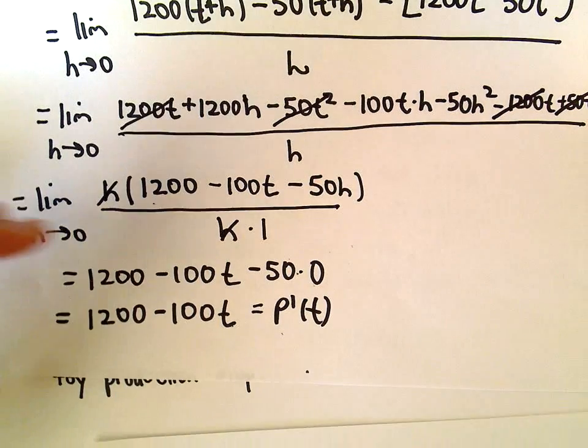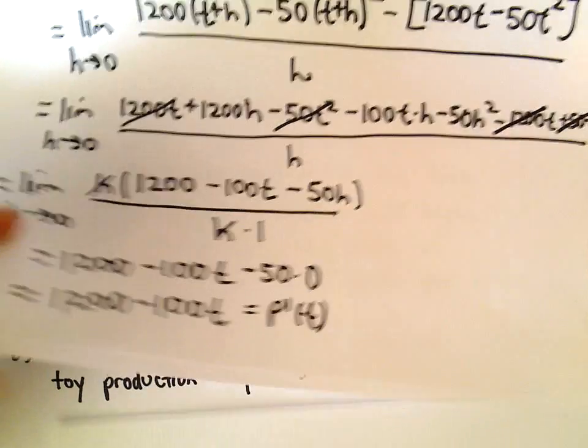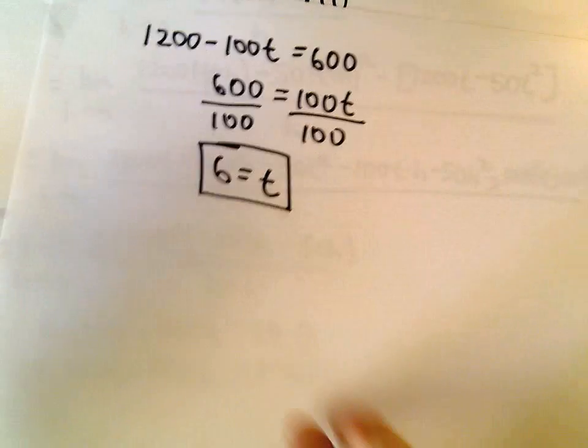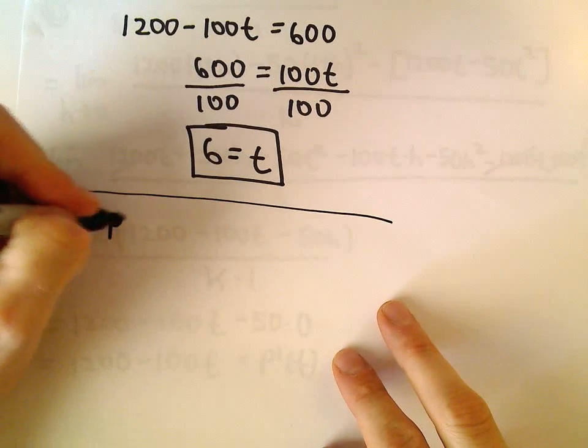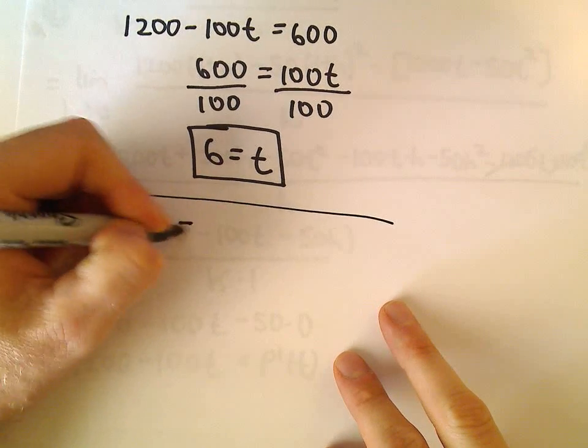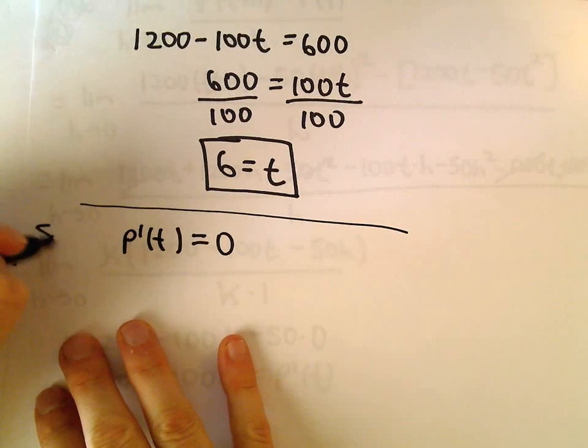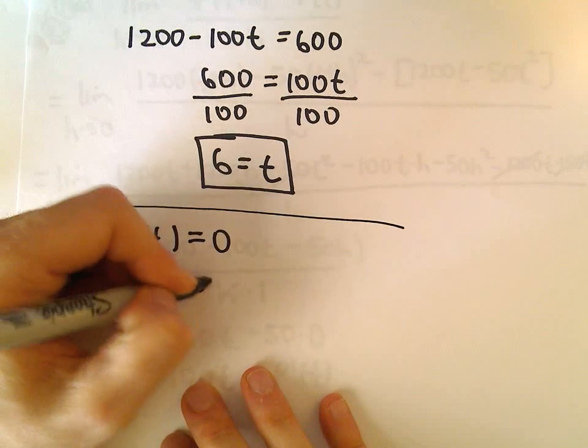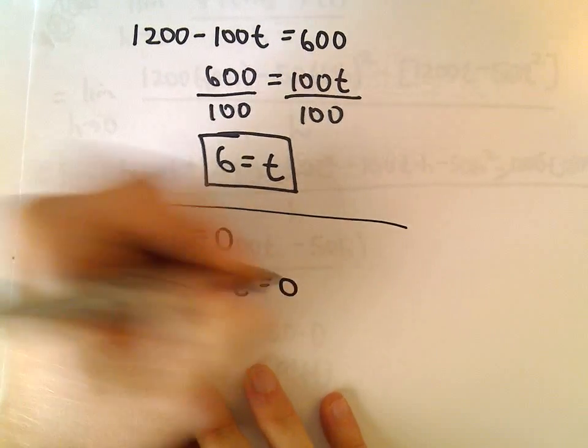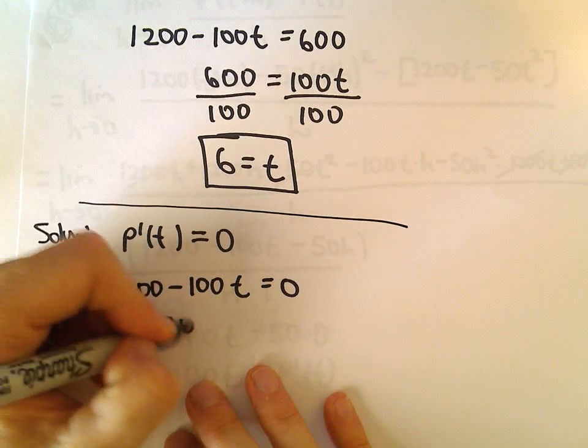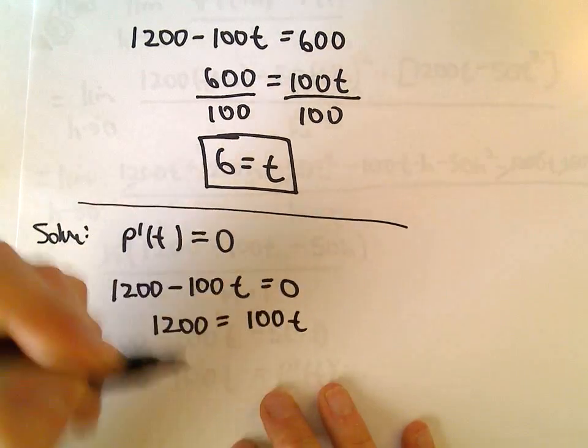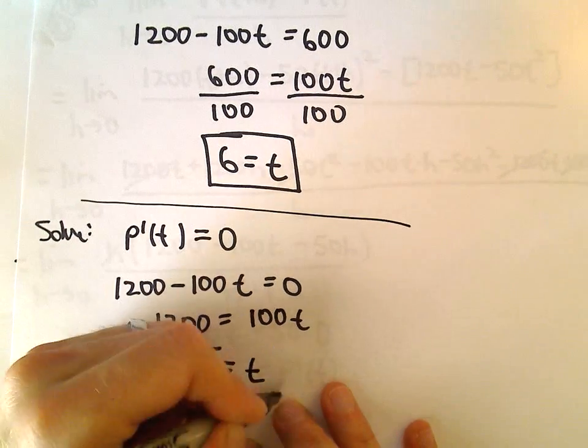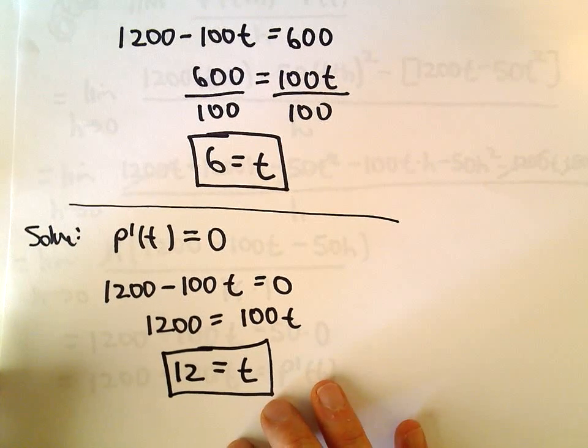The last thing we need to do, for part B, at what time does the rate of toy production stop? If the toy production stops, that's when the rate of change equals 0. Now we have to solve this equation. Our derivative P'(t) was 1200 - 100t, and now we'll set that equal to 0. We can add the 100t over to the right side, and if we divide both sides by 100, we'll get t = 12. So 12 hours later, the rate of toy production stops.